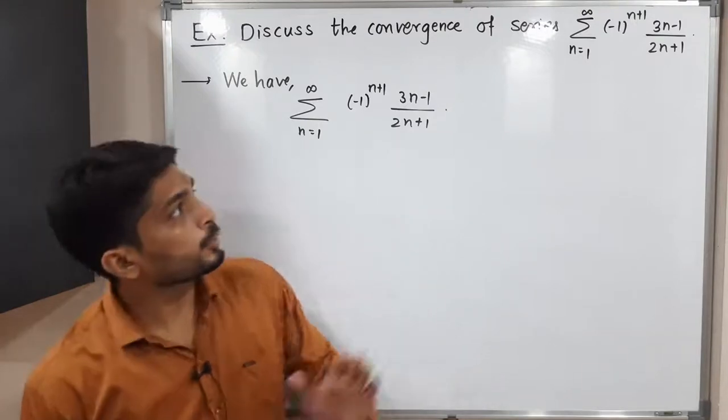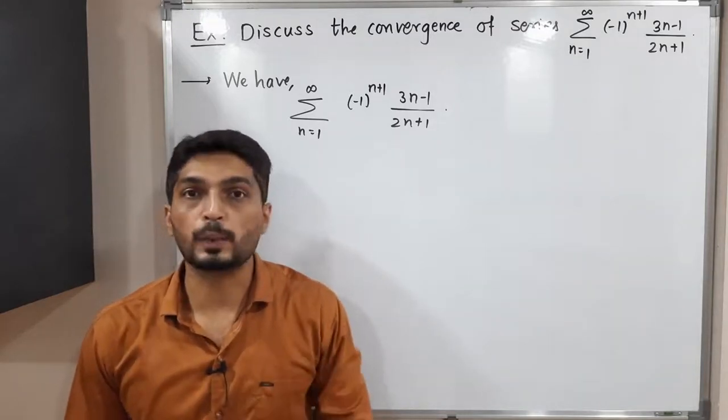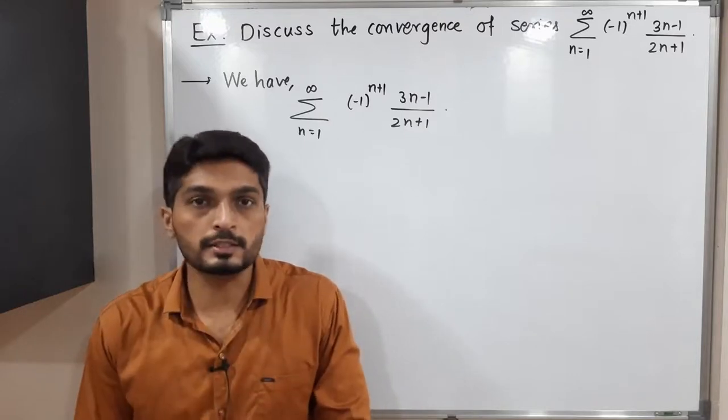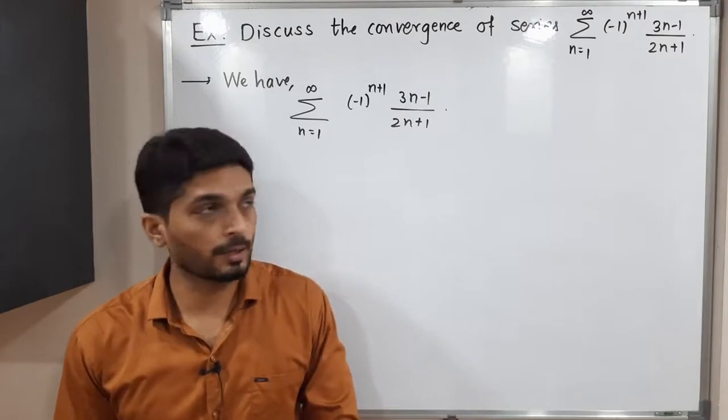See, did you notice one thing? In the series we have minus 1 raised to n plus 1, that means it is an alternating series. So when you have an alternating series, normally we go for Leibniz theorem to test this convergence.